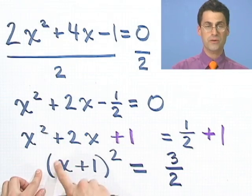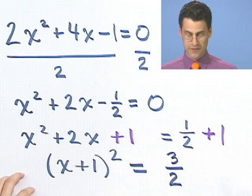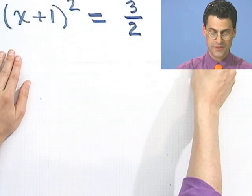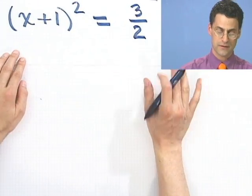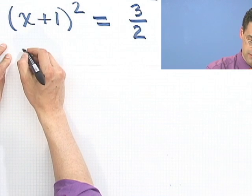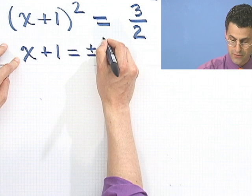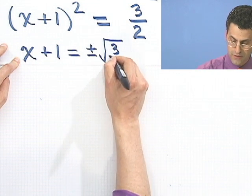Okay, well how do we solve? Well now I've got a perfect square, so I can take plus or minus square roots of both sides. So let's try that. If I take plus or minus square roots of both sides, what I see is x plus 1 equals plus or minus the square root of 3 over 2.